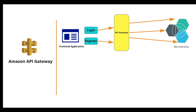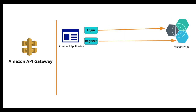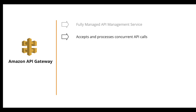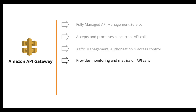Without API Gateway you would have to connect all your API resources directly to user-facing applications, making it difficult to manage responses, implement updates, or secure your APIs. API Gateway simplifies building and managing APIs, boosts security by not exposing endpoints, minimizes the attack vector, assists with traffic management, authorization and access control, and provides monitoring and metrics on API calls. It also integrates seamlessly with other AWS services like Lambda and EC2.